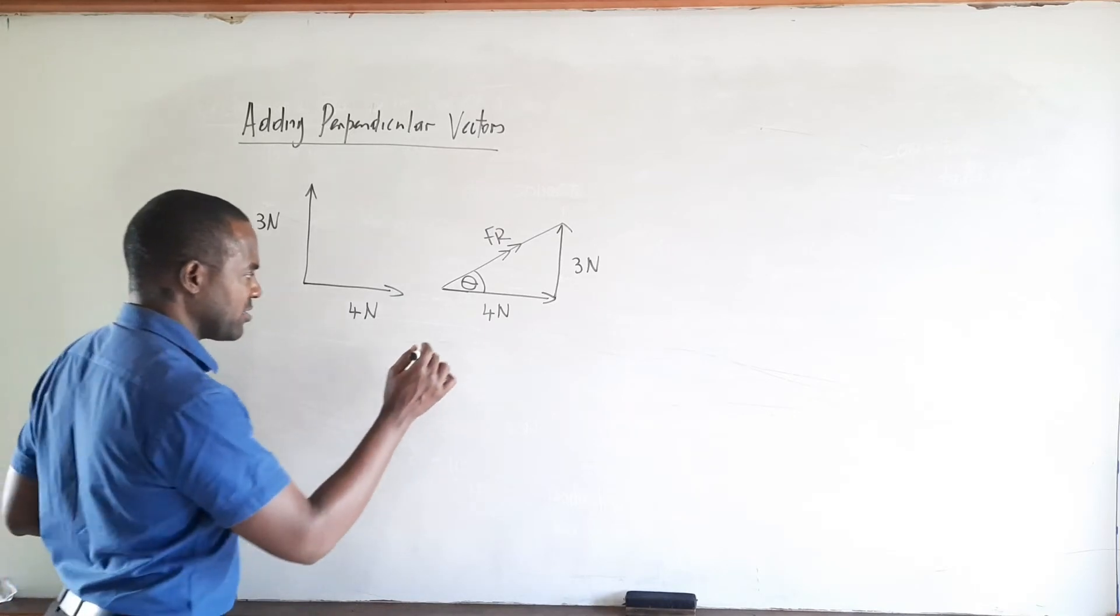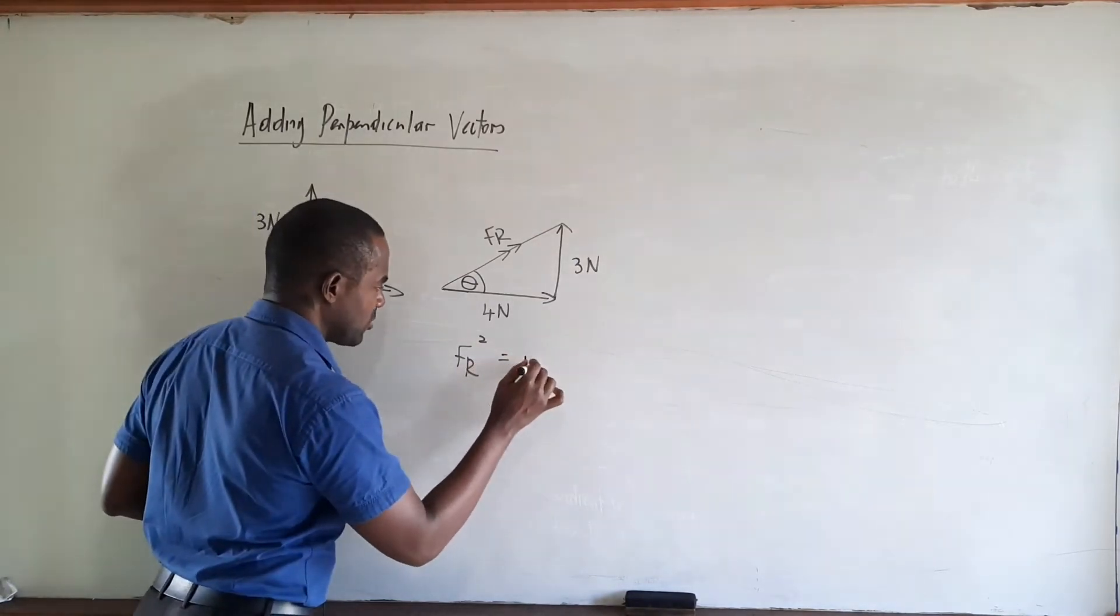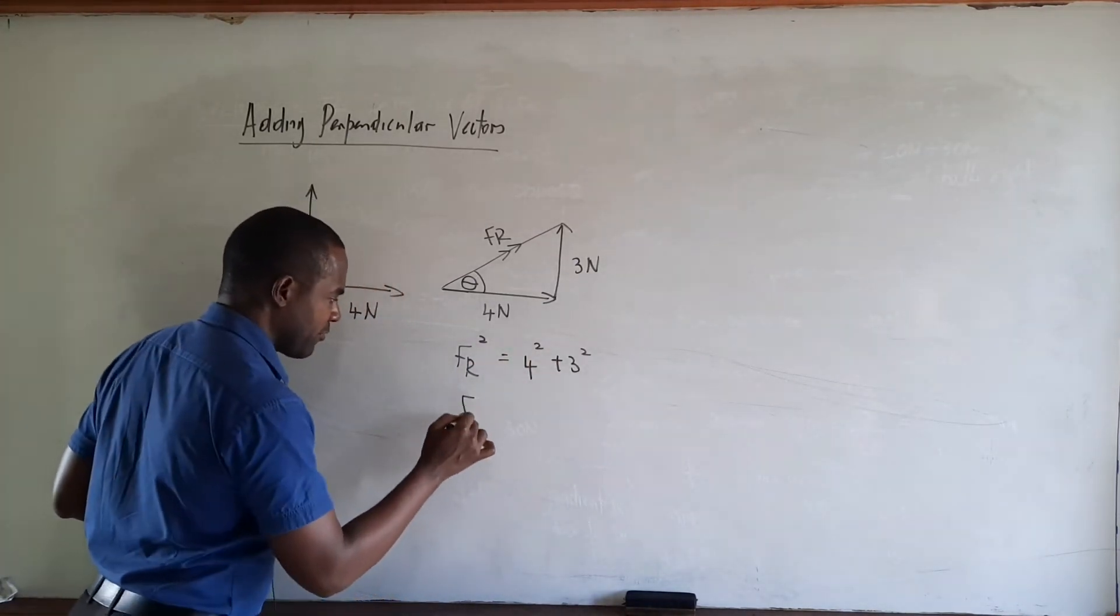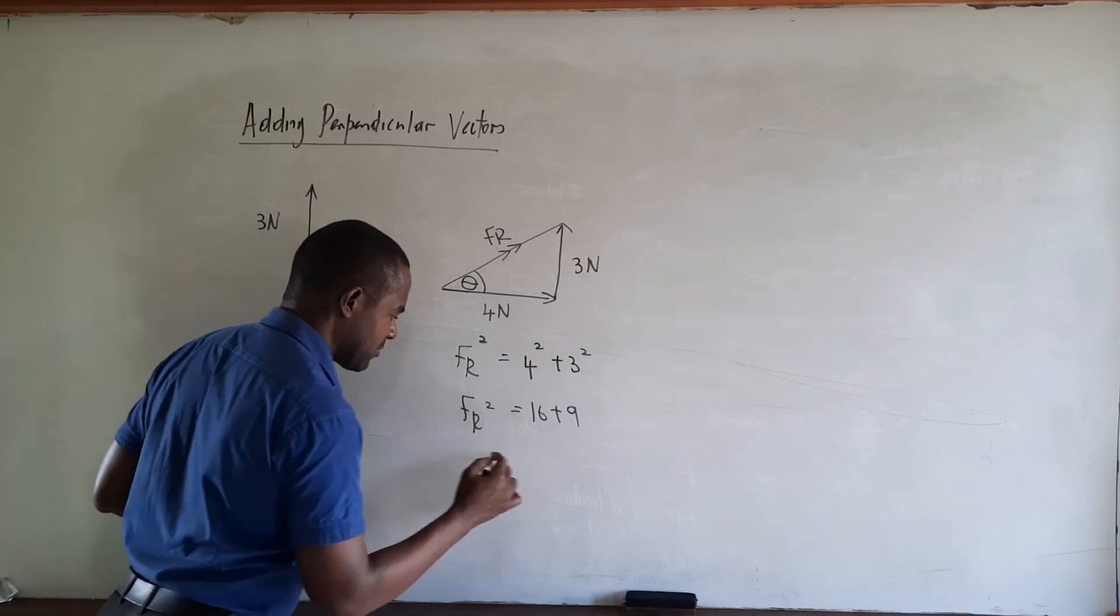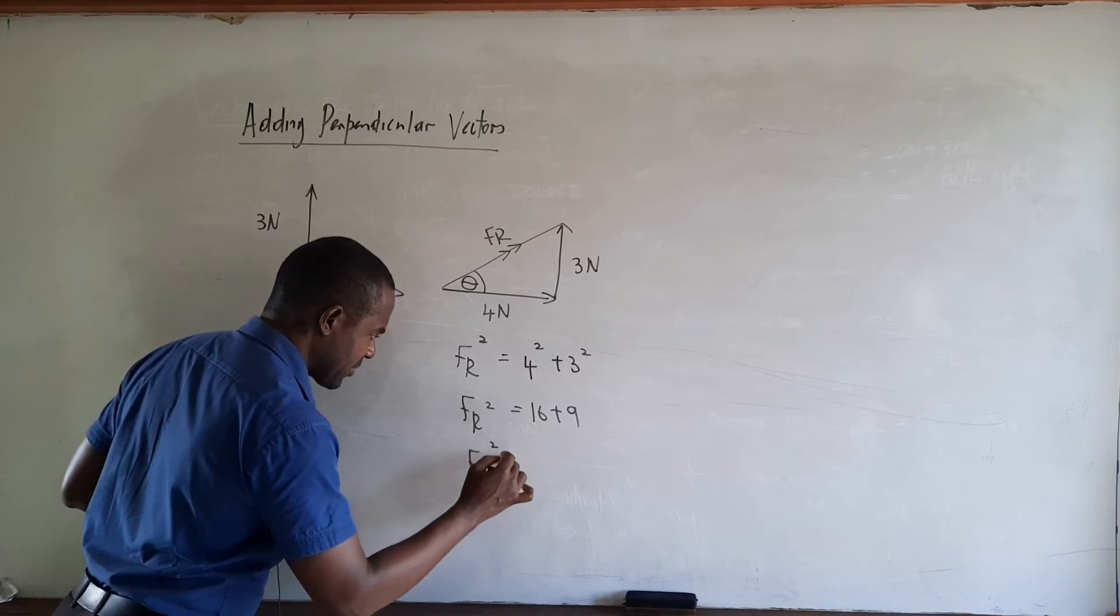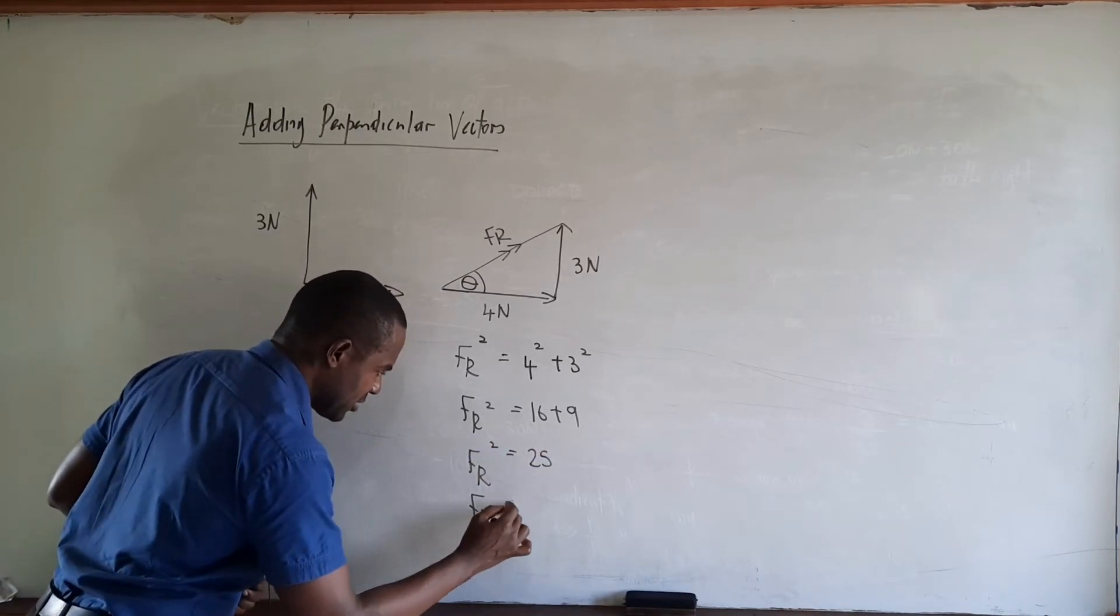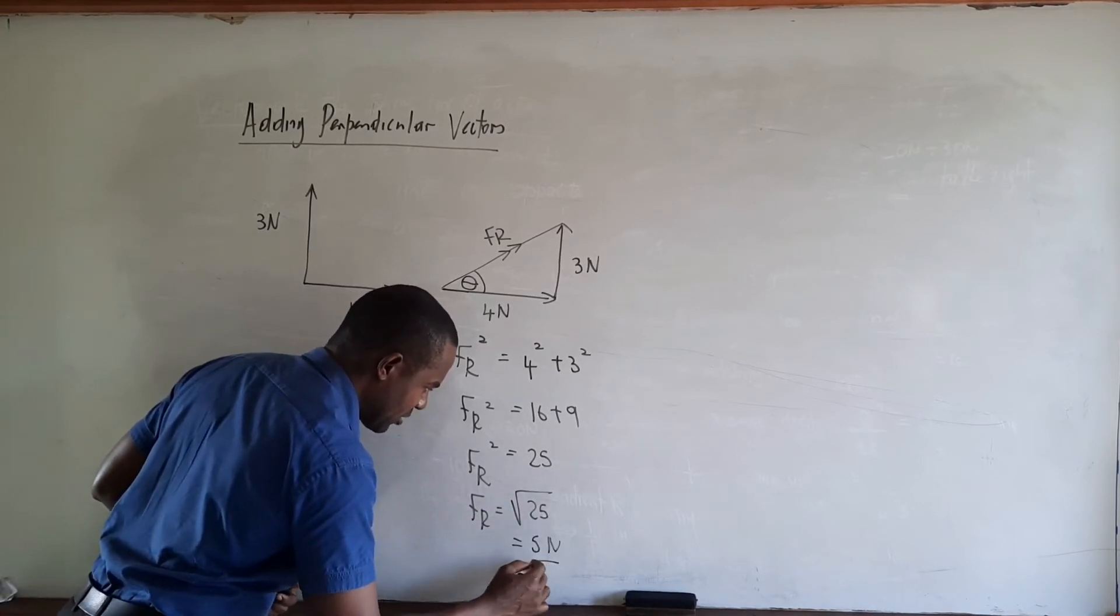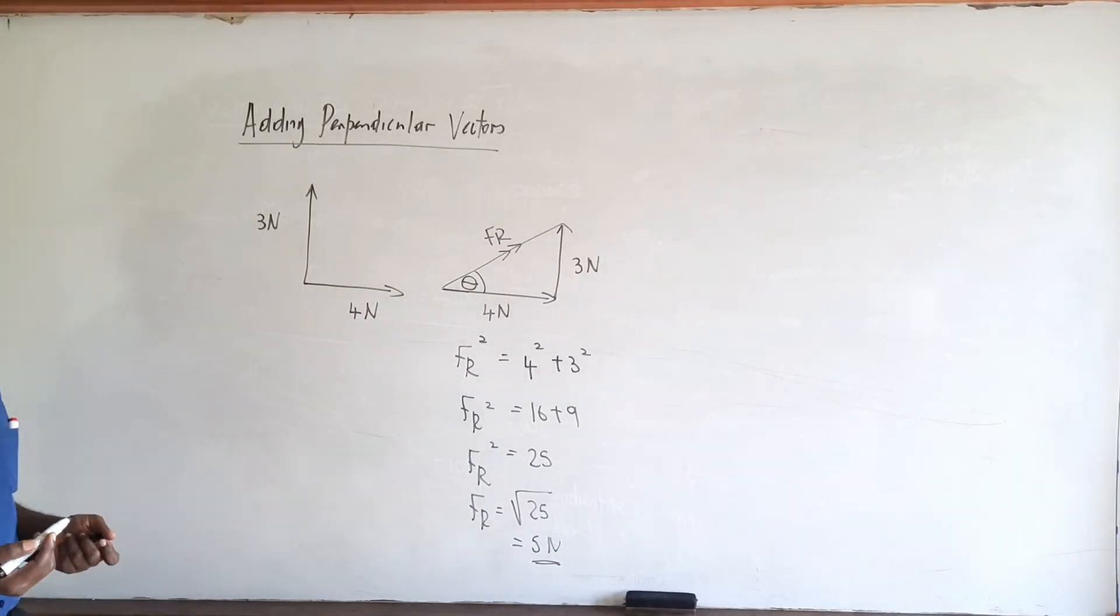So by Pythagoras' theorem, the resultant force FR squared is equal to 4 squared plus 3 squared. Therefore FR squared equals 16 plus 9, FR squared equals 25, and therefore FR is equal to the root of 25, which is equal to 5 Newtons. So the magnitude of the resultant is equal to 5 Newtons.